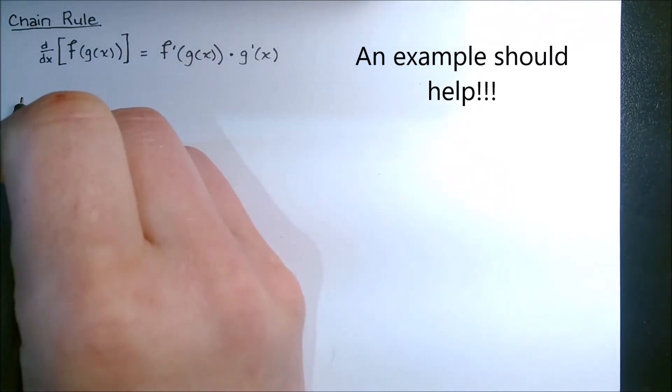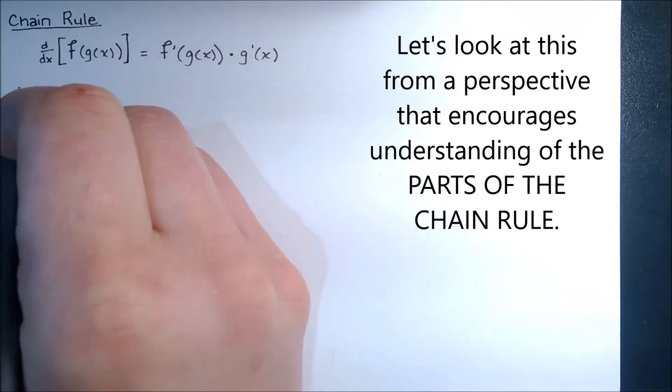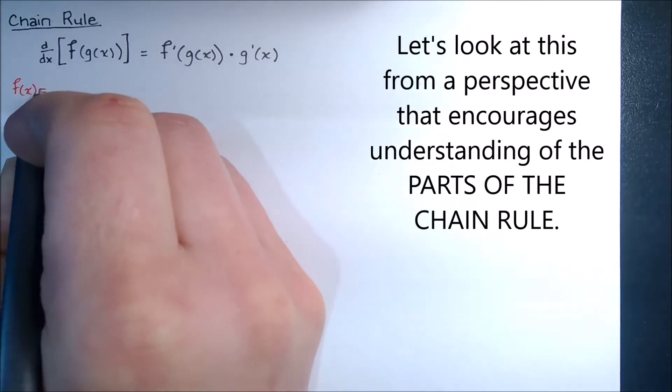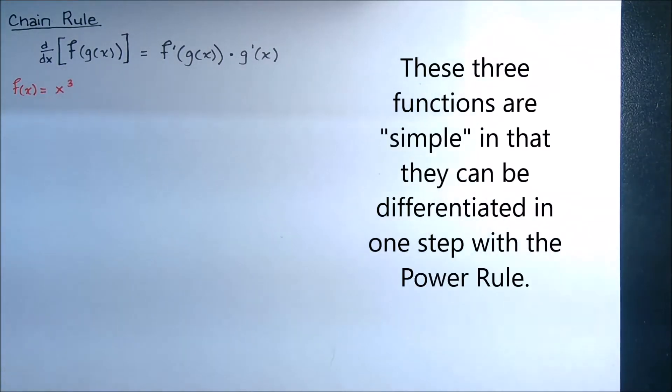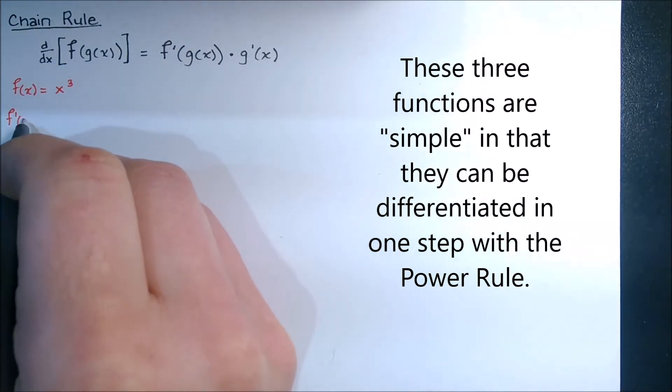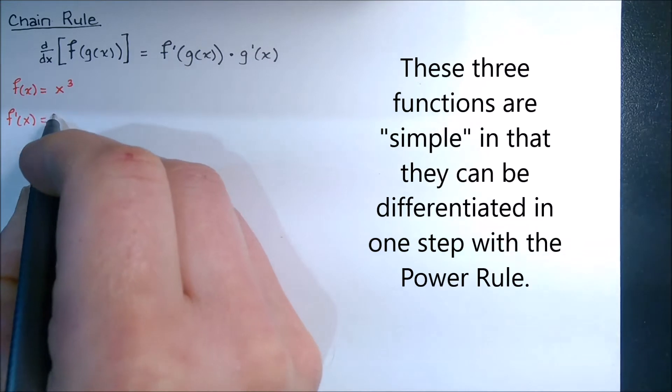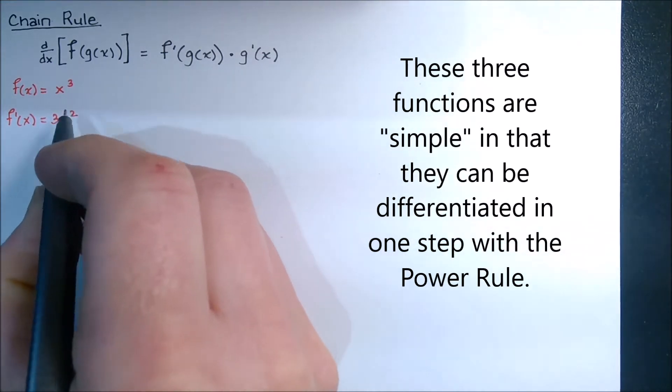So I'm going to kind of build this from the ground up. We're going to look at this idea of having a function f of x and making that equal to just plain old x cubed. Hopefully at this point, you all know how to apply the power rule to this to find that f prime of x is simply 3x squared.